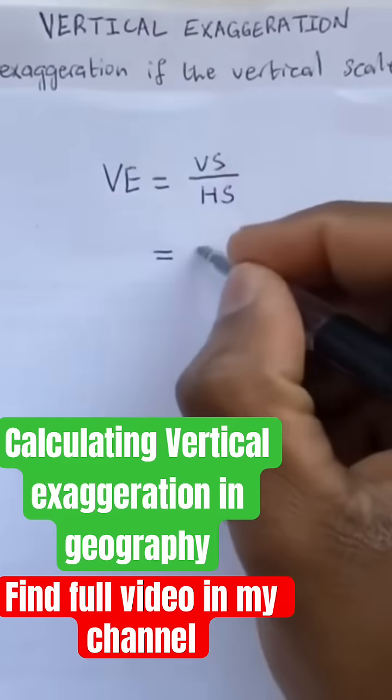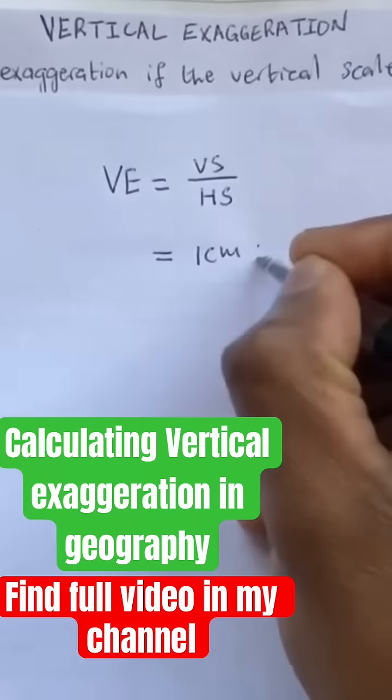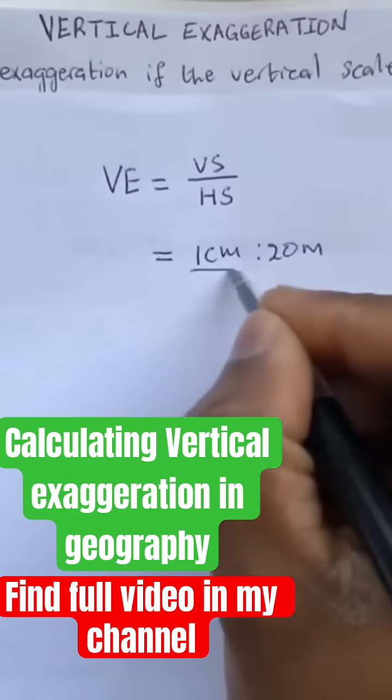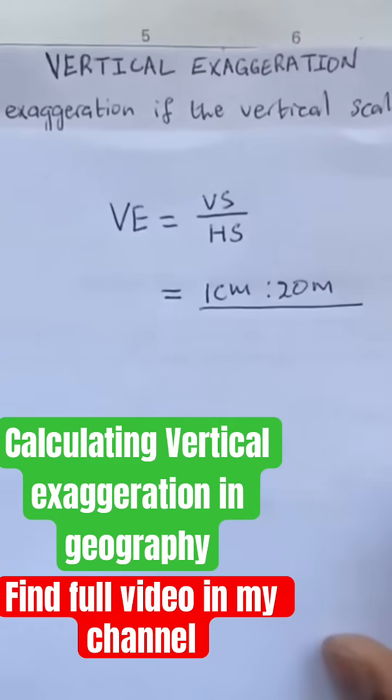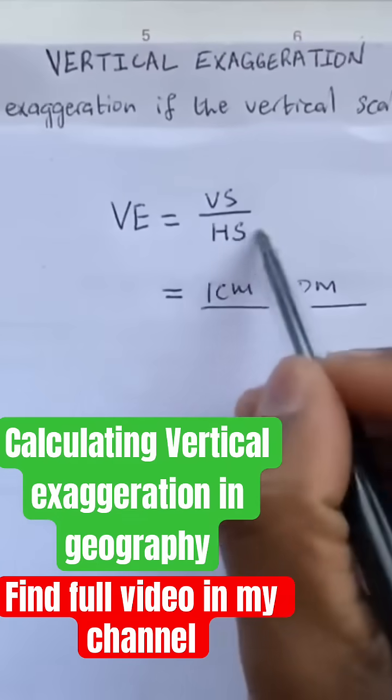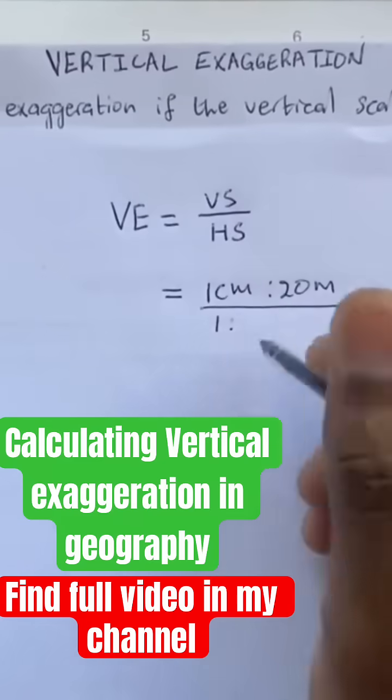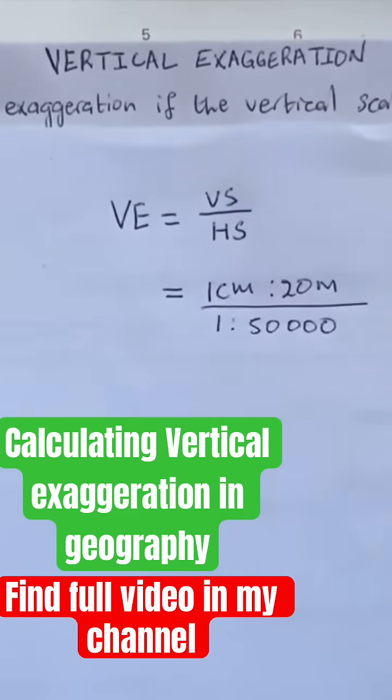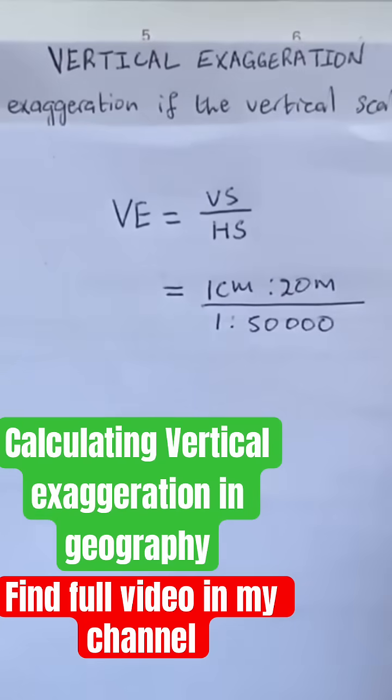I'm just going to write it as VE, which is one centimeter represents 20 meters, divided by the scale of the map, which is my horizontal scale, which is one is to 50,000. Note that the scale of